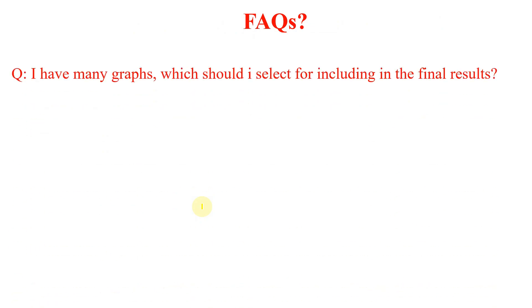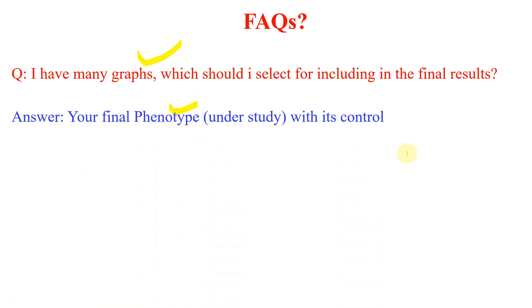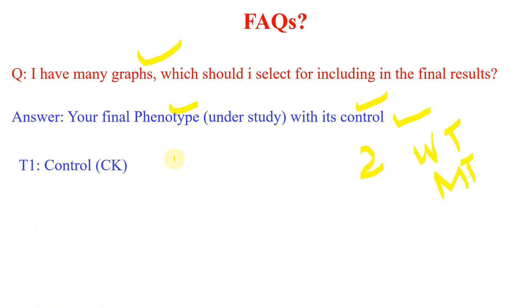Now I will try to answer some frequently asked questions. Many students ask that they have many graphs and don't know which one to select for inclusion in the final results, because they probably received their results from an analyst. The answer is that your selection should be based on your final phenotype and its control, since GO term analysis is only applied between two treatments. If you have many treatments — for example T1, T2, T3, and T4 — where T1 is the control (CK) and others involve PEG at 30%, 50%, and 70%...